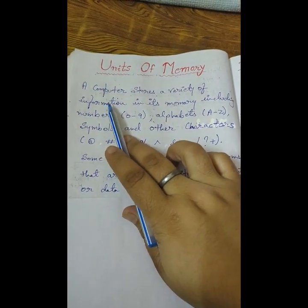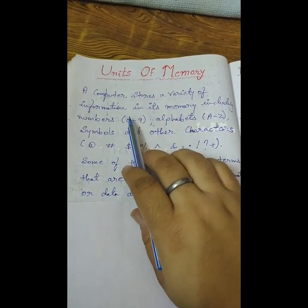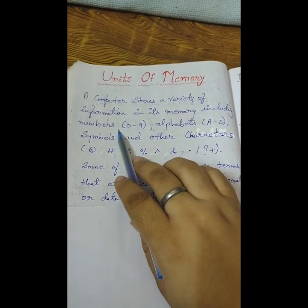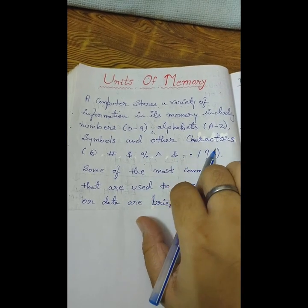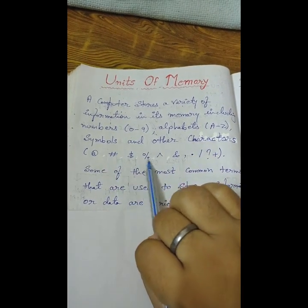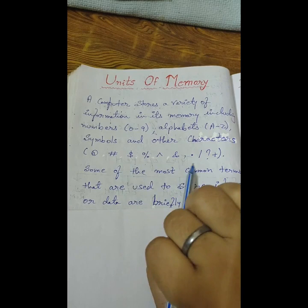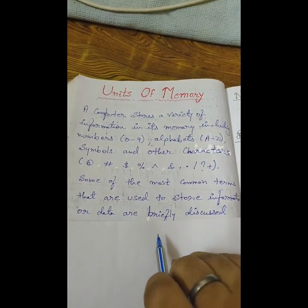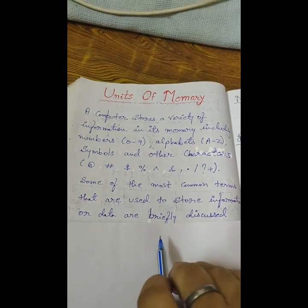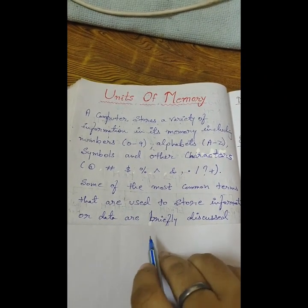A computer stores a variety of information in its memory including numbers, alphabets, symbols and other characters. You know that these are some characters or symbols. Some of the most common terms that are used to store information or data are briefly discussed.